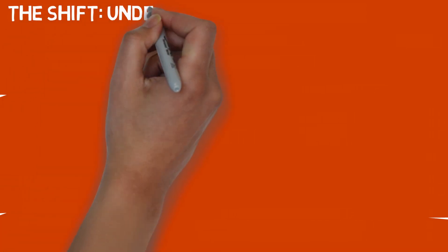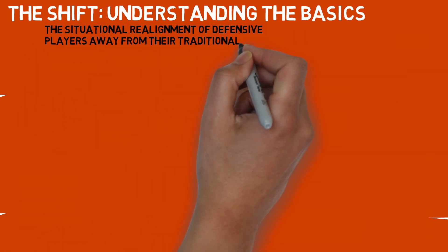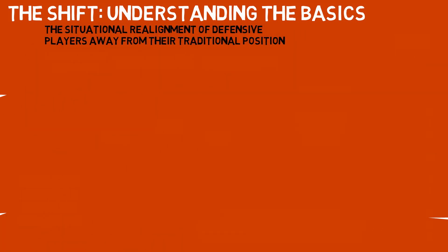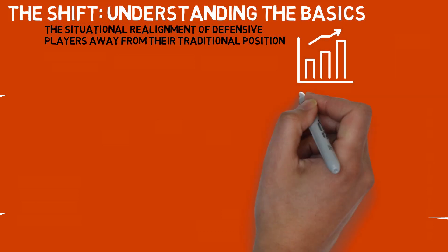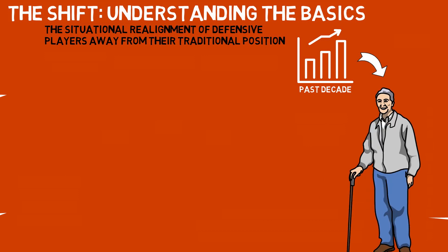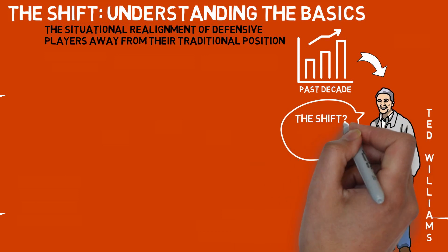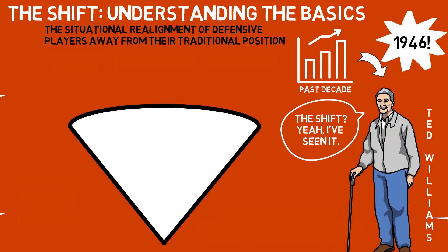Before we can dive deeper into the nitty gritty details of the shift, we first need to understand the basics. The definition of a shift is the situational realignment of defensive players away from their typical alignment. It has become increasingly popular over the past few decades, but it dates back much earlier than that — there is a record of teams shifting Ted Williams all the way back in 1946, and even a sparse few dating back to the 1920s as well.